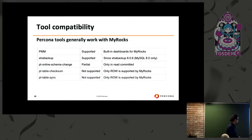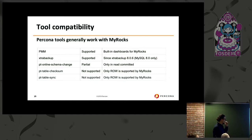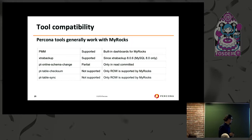For tool compatibility, if you have a MyRocks engine in your ecosystem: PMM — Percona Monitoring and Management — has built-in dashboards and can gather system catalog files, information schema, and show engine RocksDB status output. XtraBackup is supported. For online schema change, it's partially supported because it's read-committed. PT table checksum and sync cannot be used because these require row-level binary logging. That's the tooling compatibility summary.